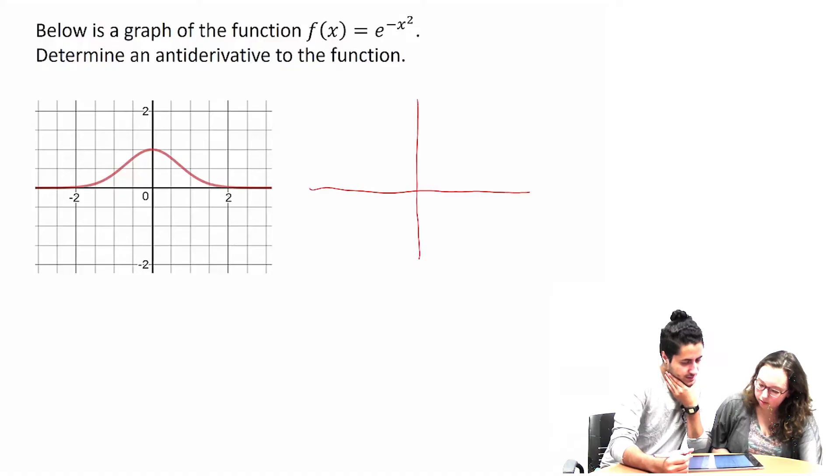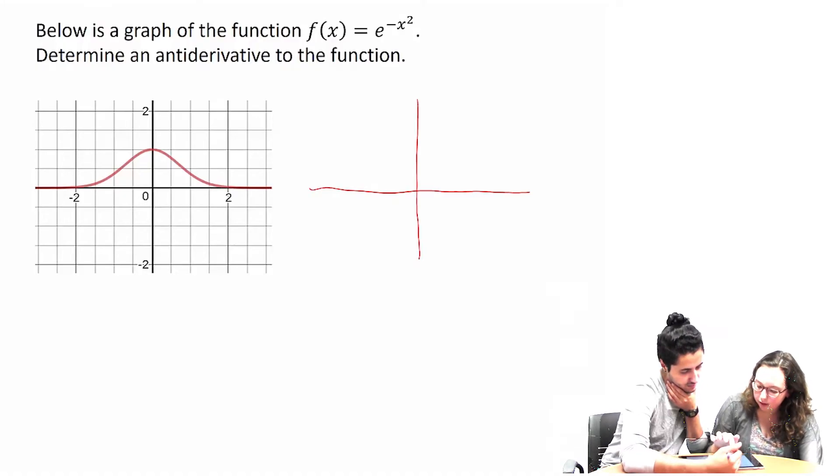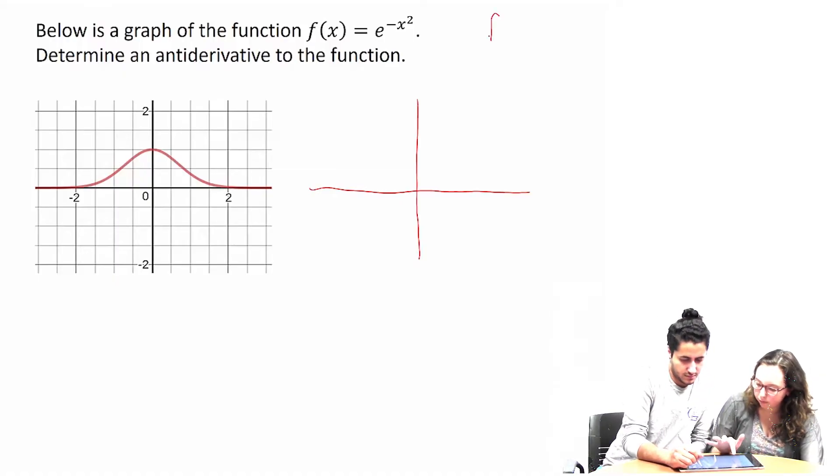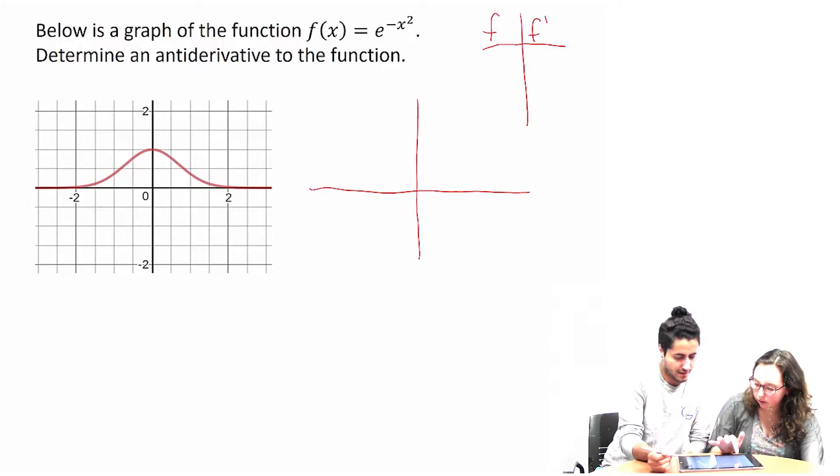Okay, so like this graph is gonna be our f prime, like our derivative. So something like this, right? So we have that.